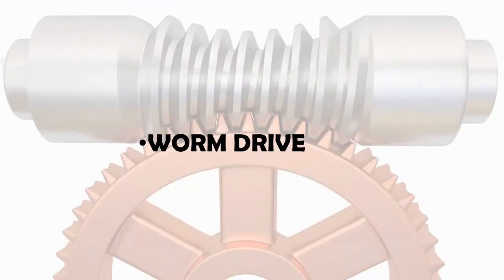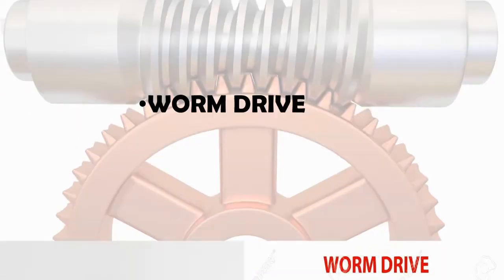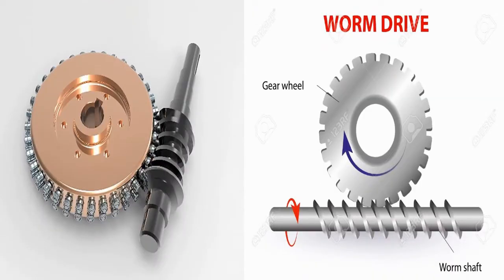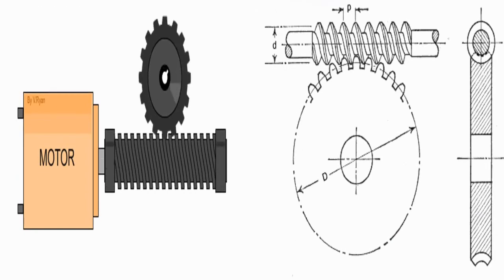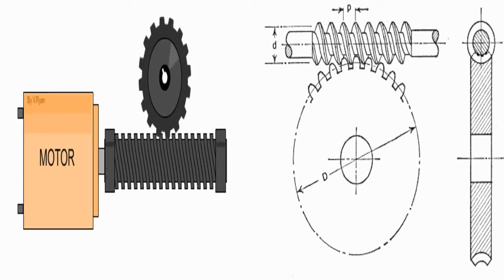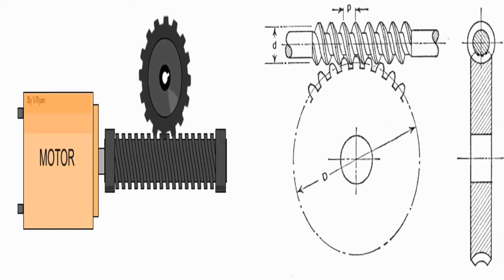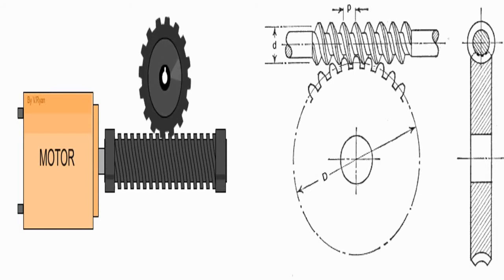Worm drive. A worm drive is a gear arrangement in which a worm, which is a gear in the form of a screw, meshes with a worm gear, which is similar in appearance to a spur gear. The two elements are also called the worm screw and worm wheel. The terminology is often confused by imprecise use of the term worm gear to refer to the worm, the worm gear, or the worm drive as a unit. Like other gear arrangements, a worm drive can reduce rotational speed or transmit higher torque. A worm is an example of a screw, one of the six simple machines.